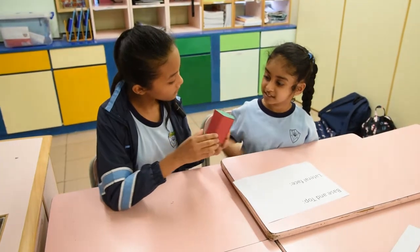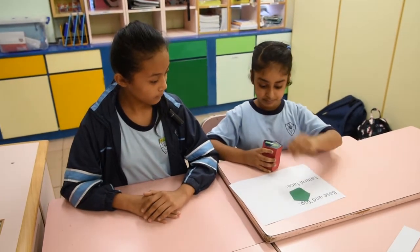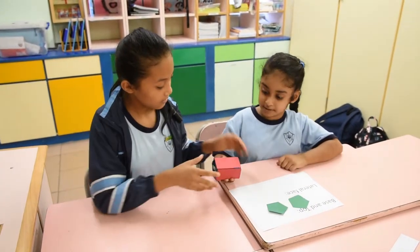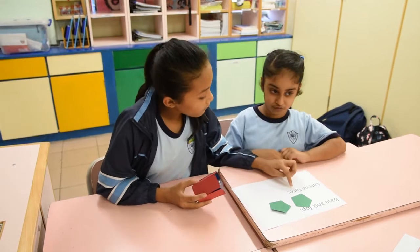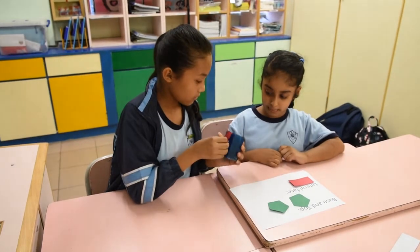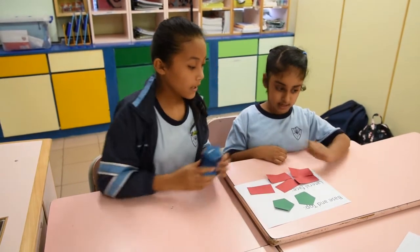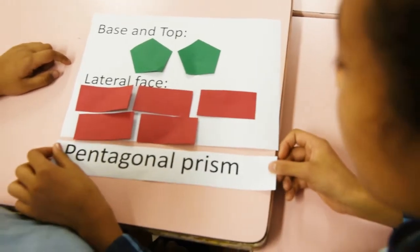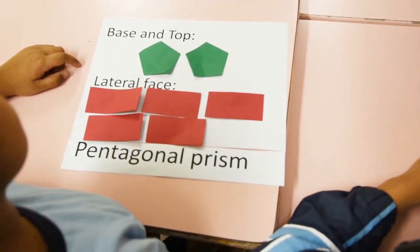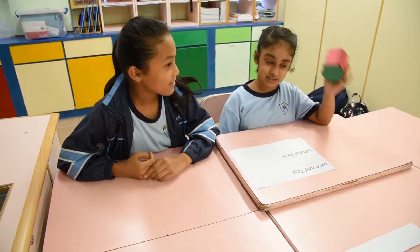Do you know this? Face at top. Lateral face. Pentagonal prism. The top and the base are pentagon. It has 7 faces. I know this last one.